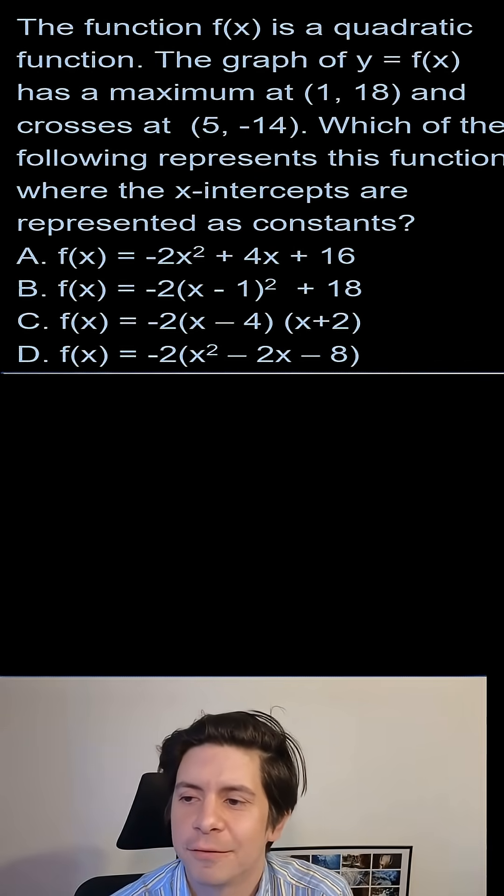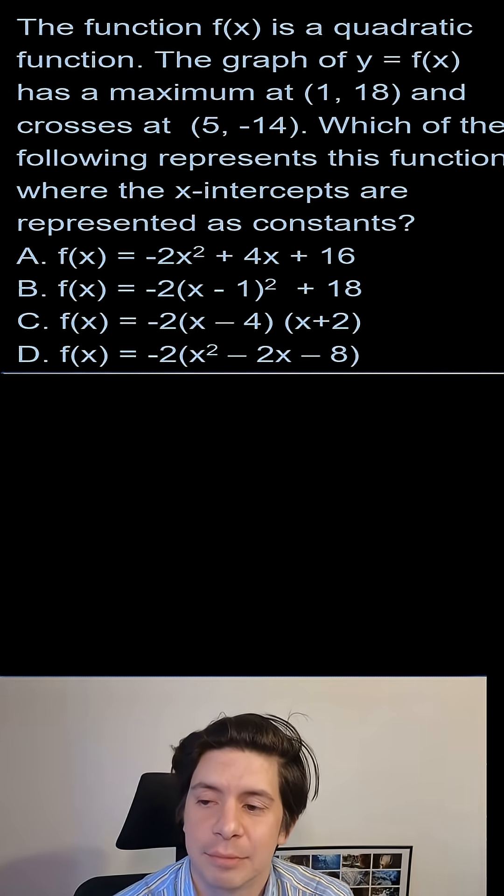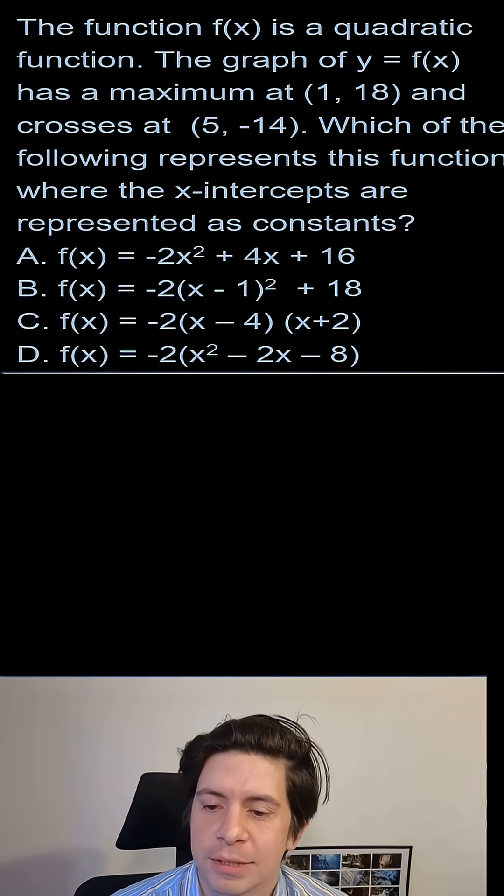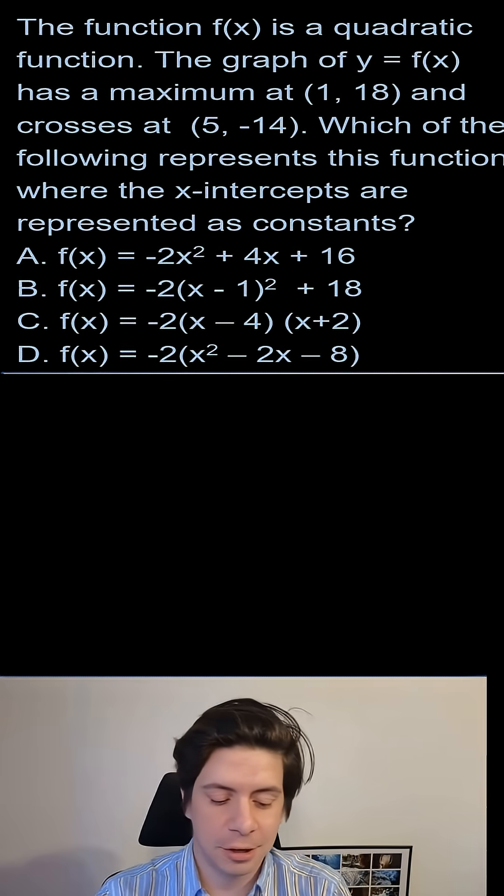The function f(x) is a quadratic function. The graph of y equals f(x) has a maximum at (1,18) and crosses at (5, -14). Which of the following represents this function where the x-intercepts are represented as constants?